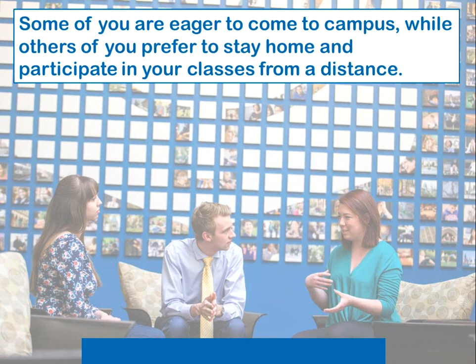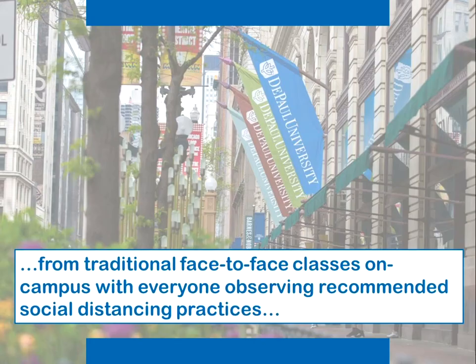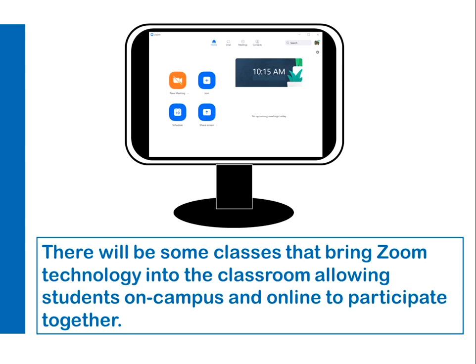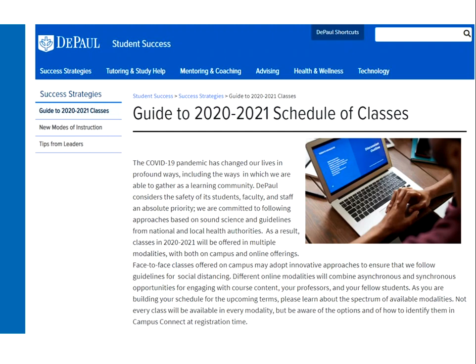So this fall we will be offering classes in a variety of ways, from traditional face-to-face classes on campus with everyone observing recommended social distancing practices, all the way to classes that are entirely online with no on-campus meetings at all. As part of this, there will be some classes that bring Zoom technology into the classroom, allowing students on campus and online to participate together. This video will show you how these different modes of instruction will be represented in the Campus Connect class schedule. You can also find fuller descriptions of them on the student success website.